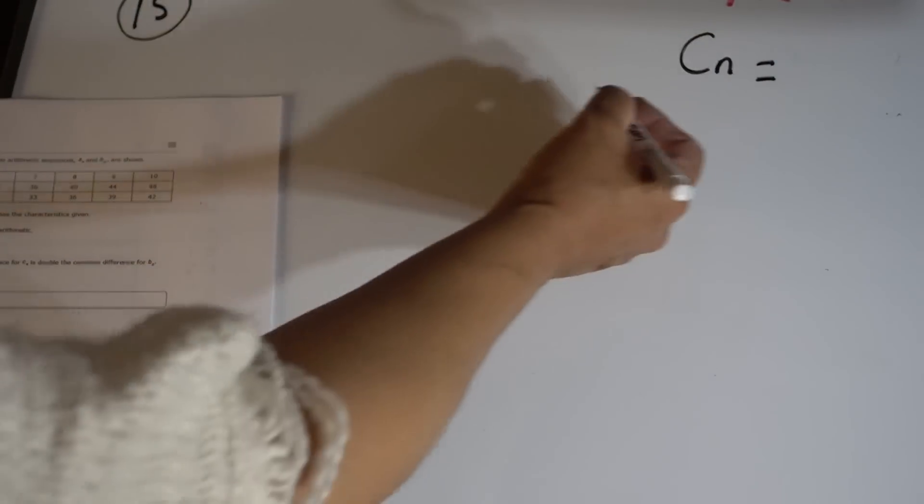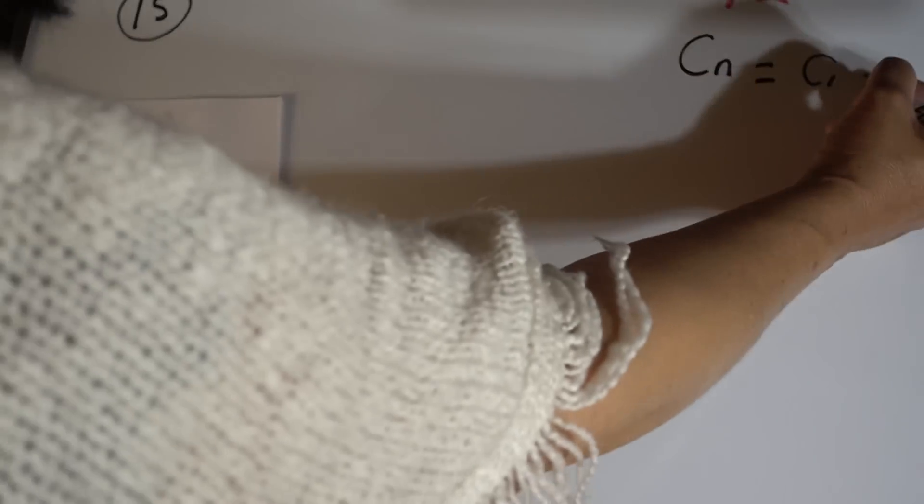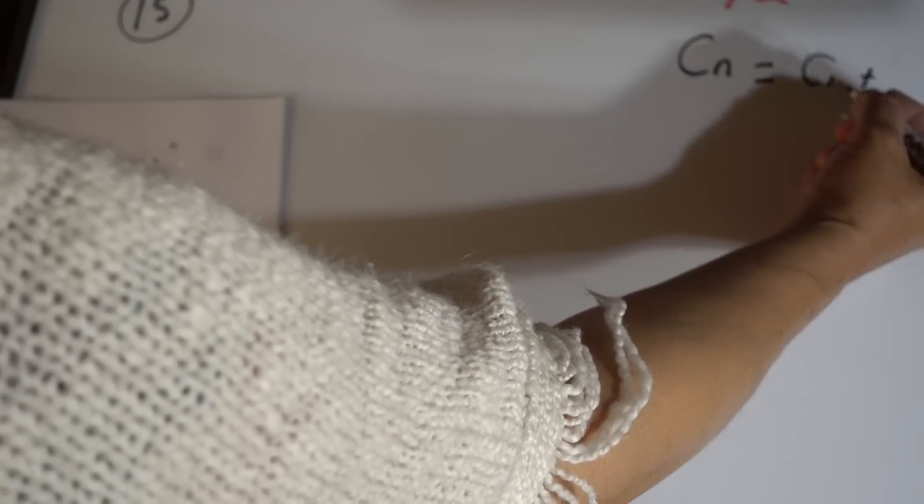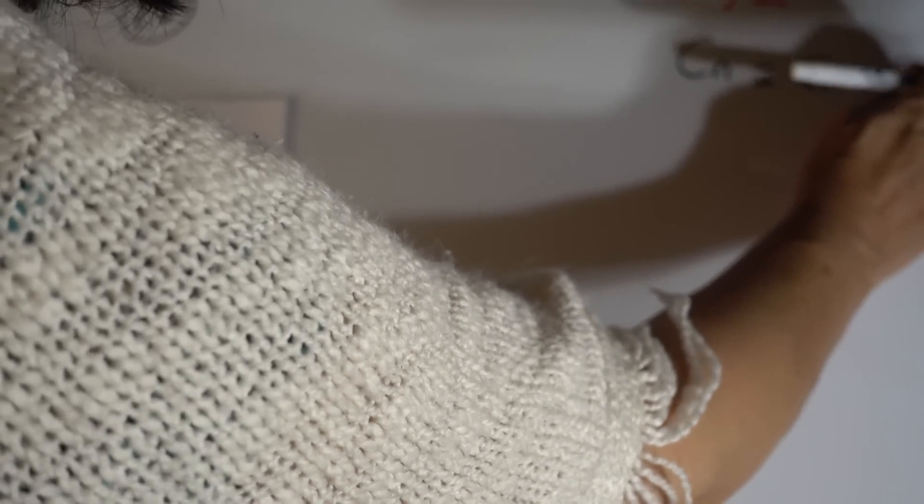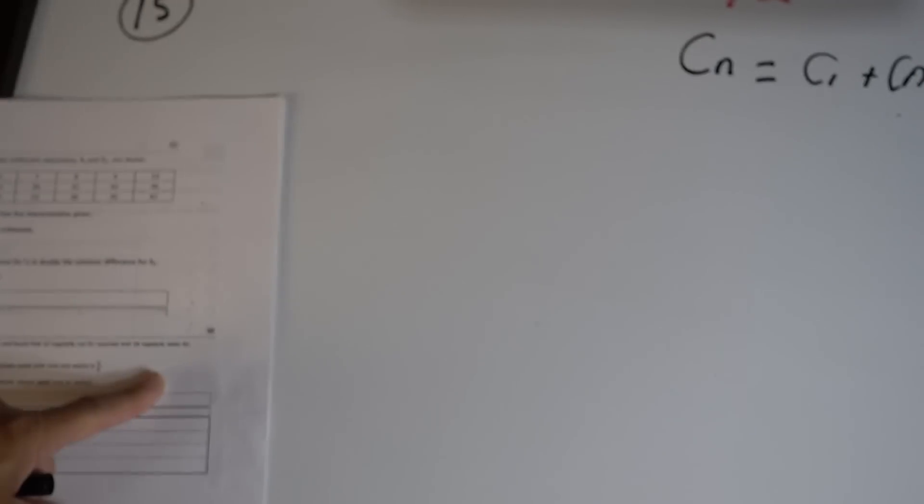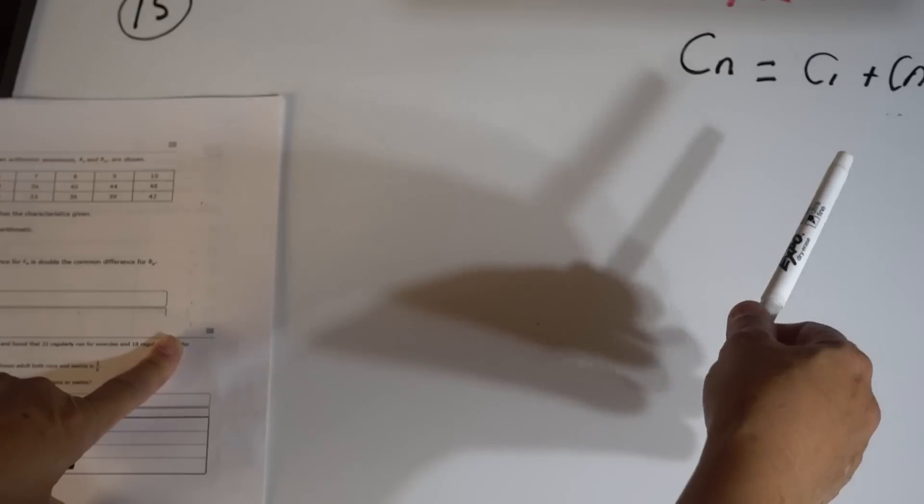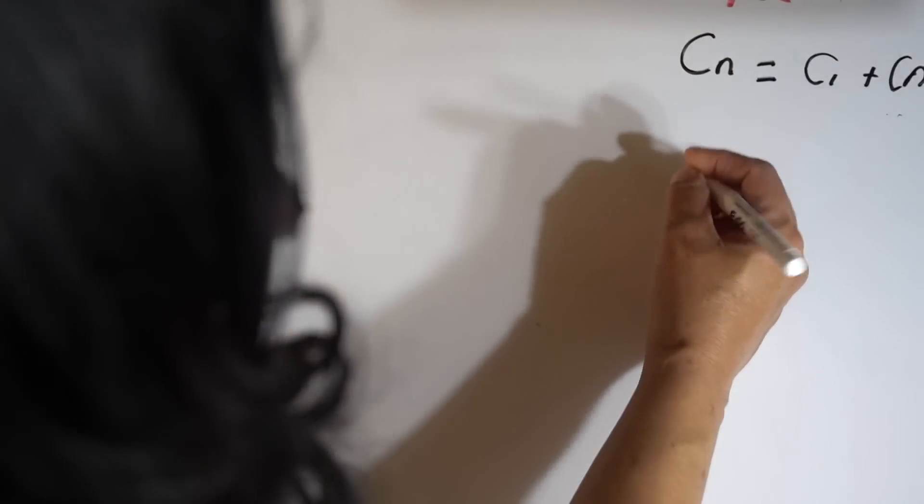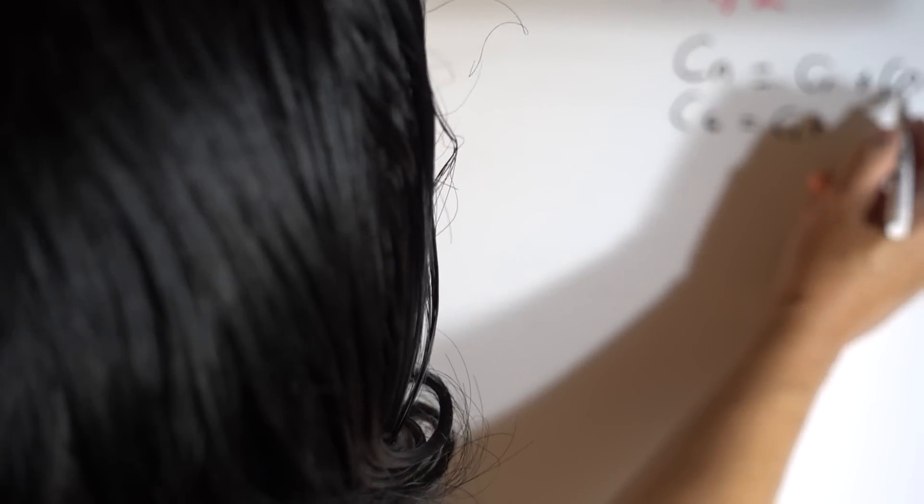The problem here is finding c_6, and that's going to be given by the first term of c_n plus n minus 1 times d. We have c_6 equals c_1 plus 6 minus 1, which will be 5, times 5d.